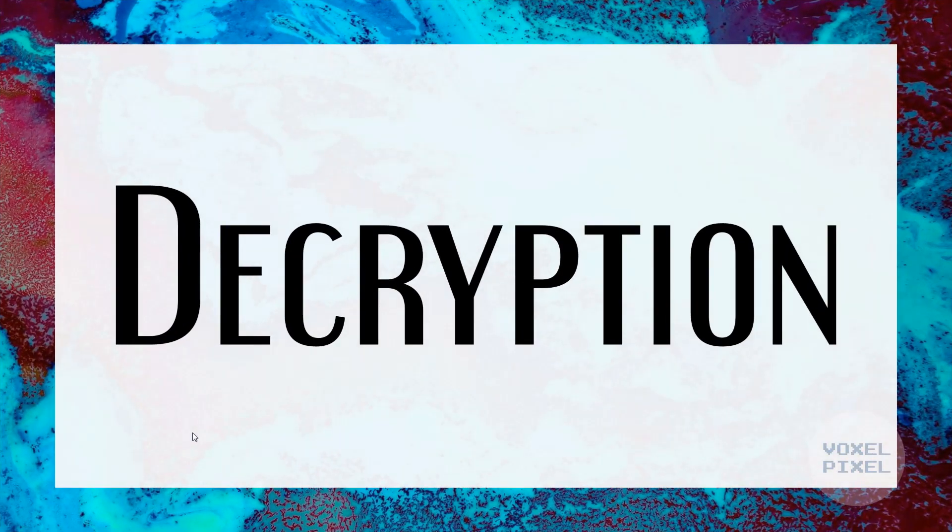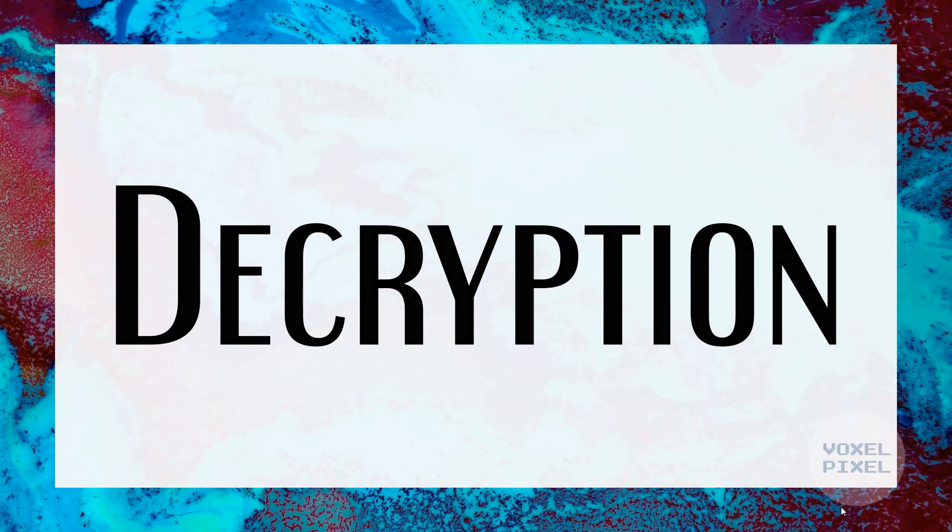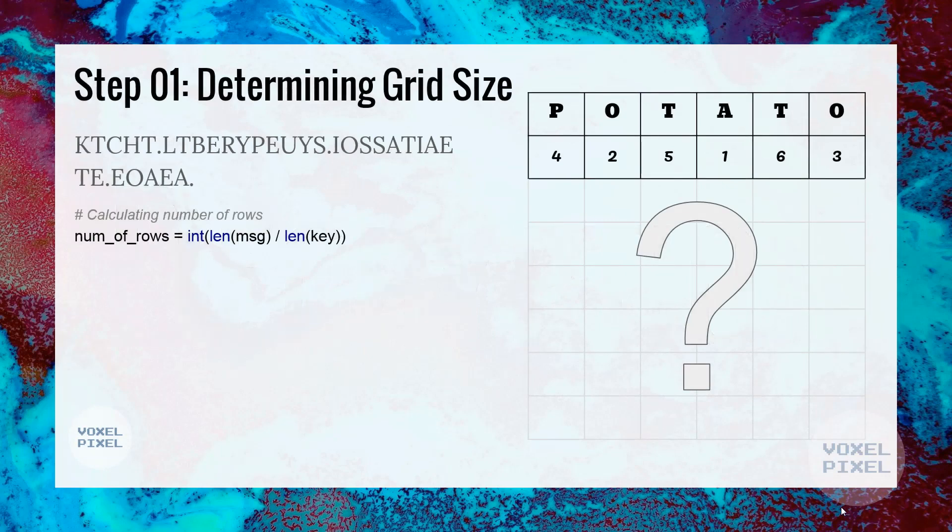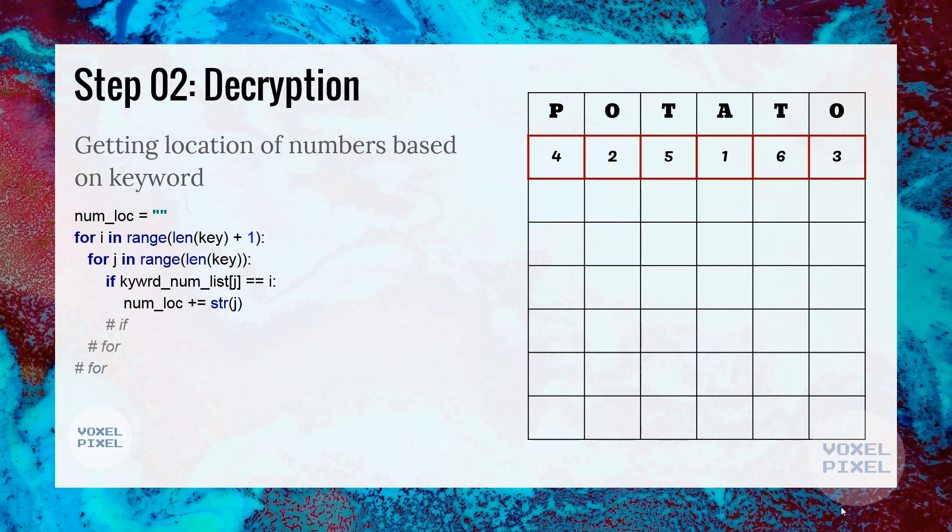Now, let's check out decryption process. Next, we will determine size of the grid. For that, we will first calculate the number of rows and we can obtain that by length of the message divided by length of the keyword. Next, we will get the location of numbers based on the keyword, as we did in encryption.